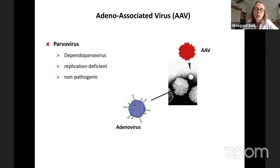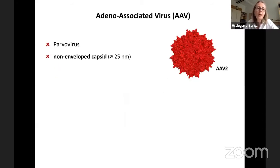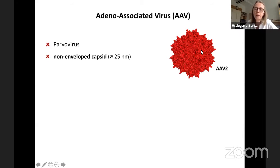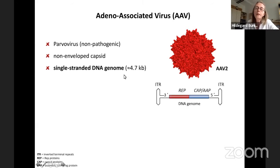If we zoom into adeno-associated virus, you see that we have a non-enveloped capsid of the size of 25 nanometers in diameter as an outer shell — hence the term parvovirus, meaning 'little.' Within this capsid, a single-stranded DNA genome is transported, which has approximately the size of 4.7 kilobases.